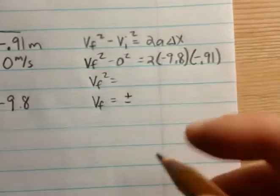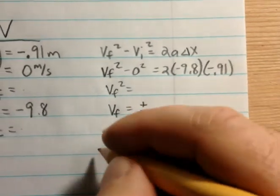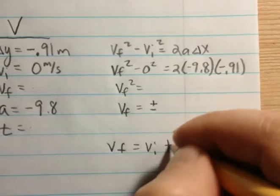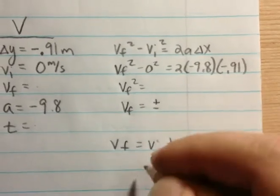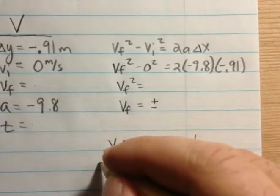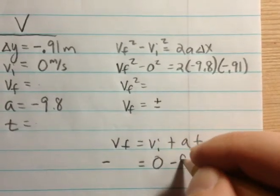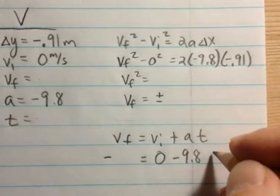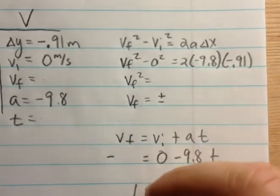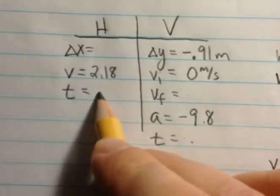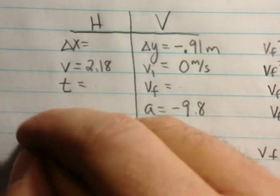Once you get your answer for that, you could then use vf equals vi plus at. You'll plug in your vf—remember it's going to be a negative number—your v initial zero, negative 9.8 times t. You solve it for t. Once you get your time, you're going to put it both on the vertical side and you're going to put it on the horizontal side.